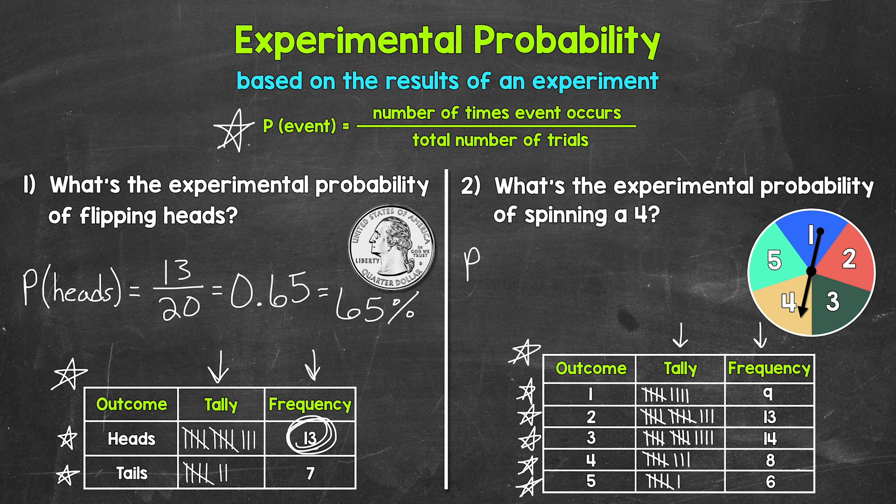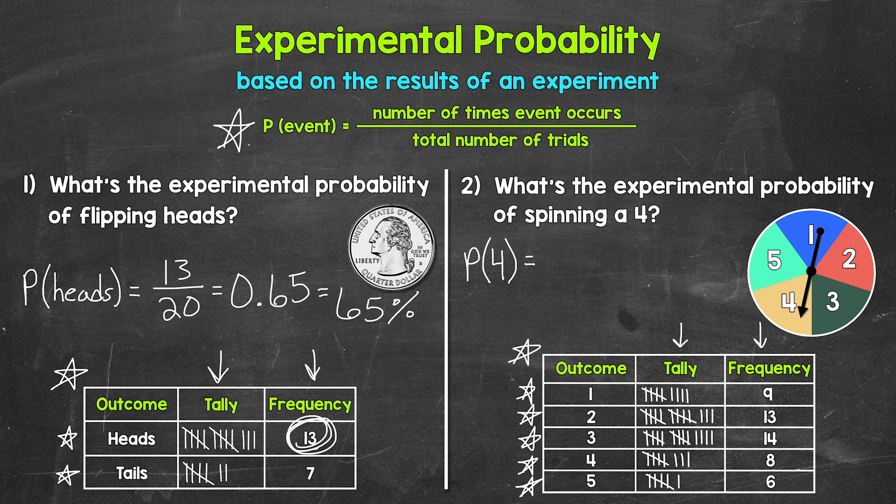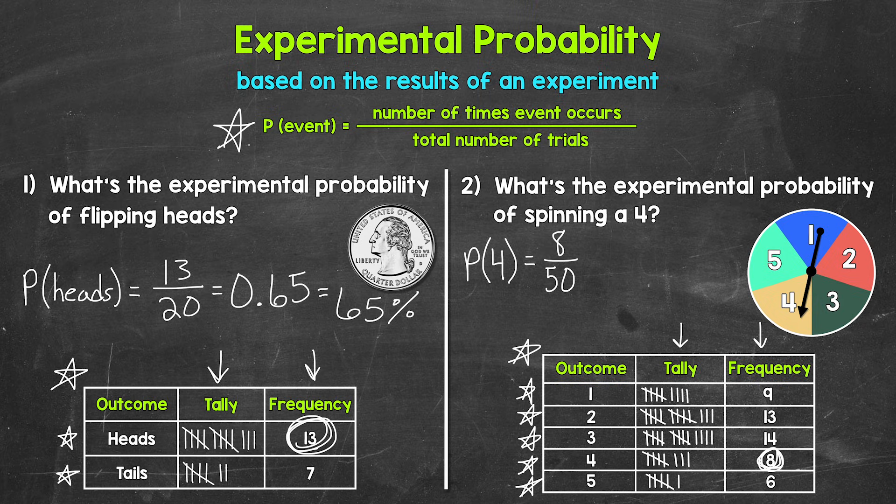So we are looking for the experimental probability of spinning a four. Now we need the number of times the event occurred. Well, the spinner landed on four eight times. So eight over the total number of trials, the total number of spins. That's 50. So we end up with the fraction eight over 50.